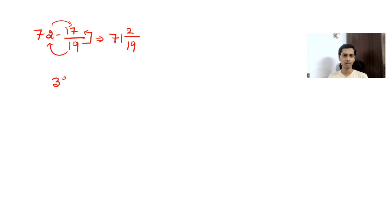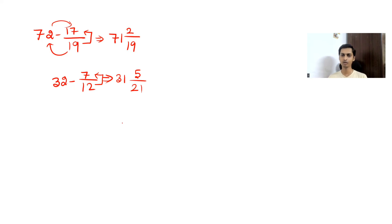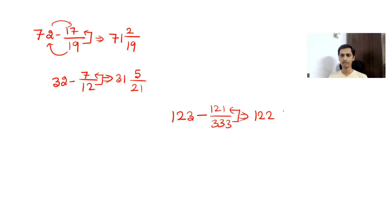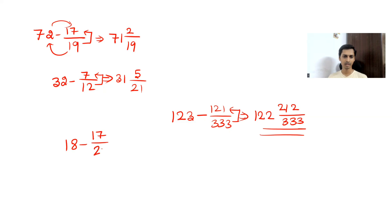Another example: 32 − 7/12. The answer is 31 and (12 − 7)/12 = 31 and 5/12. For a harder example: 123 − 121/333. Using the shortcut: 123 − 1 = 122, and 333 − 121 = 212, giving 122 and 212/333. One more: 18 − 17/21 = 17 and (21 − 17)/21 = 17 and 4/21.